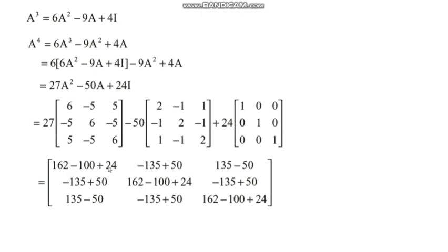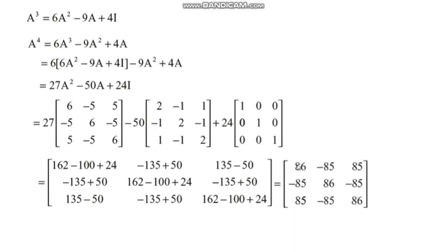After completing the computation, the resultant matrix A⁴ has first row entries [86, −85, 85], second row [−85, 86, −85], and third row [85, −85, 86]. This is the process to obtain the inverse of a given non-singular square matrix and the higher powers of the matrix using the Cayley-Hamilton theorem.